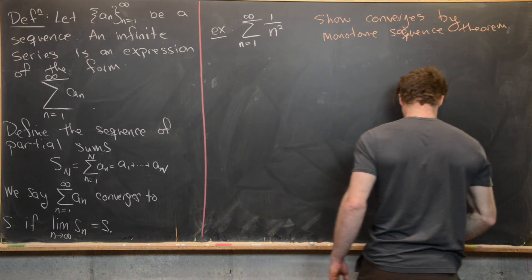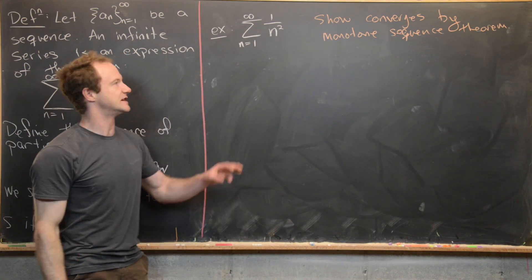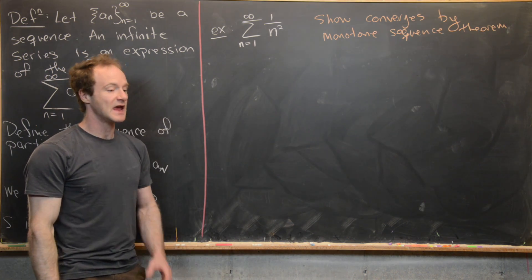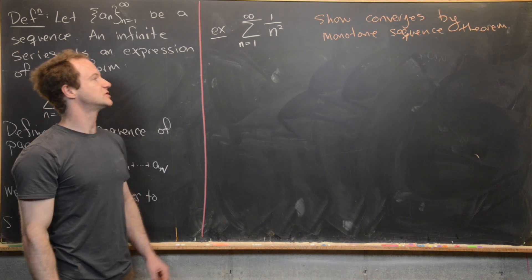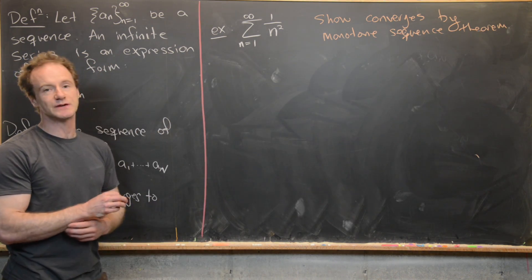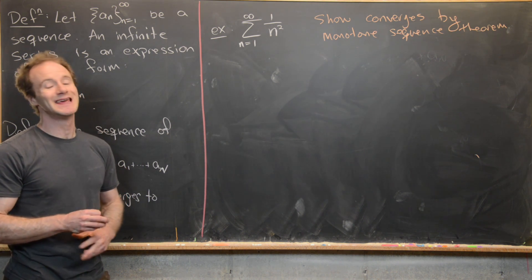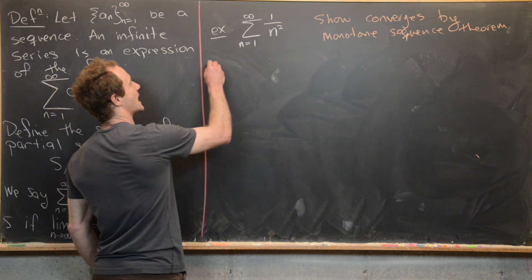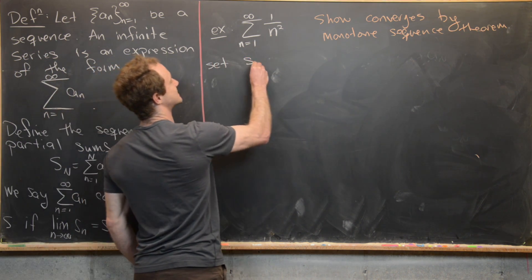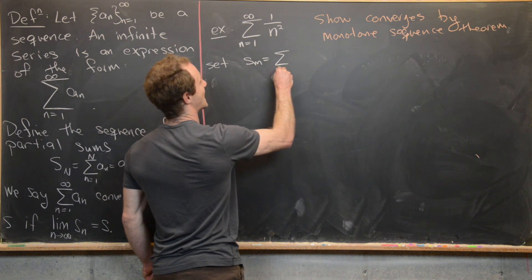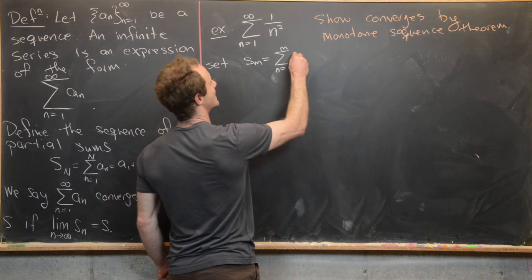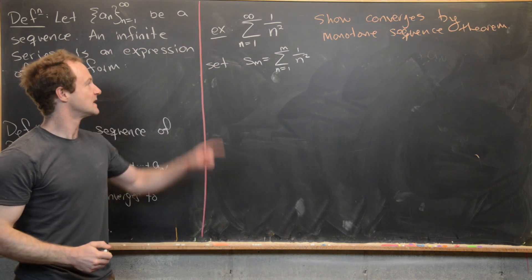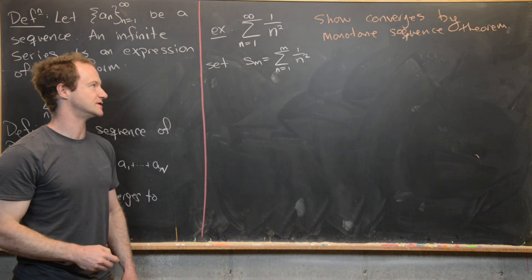To use the monotone sequence theorem, we need to show that the sequence of partial sums is increasing — which is going to be kind of obvious — and we want to show that it's bounded above. So let's set S sub m equal to the sum as n goes from 1 to m of 1 over n squared. That's our sequence of partial sums, and this is what we want to show converges by the monotone sequence theorem.